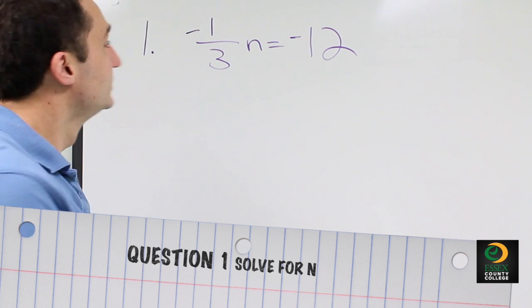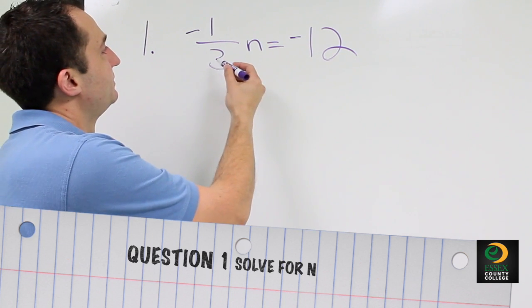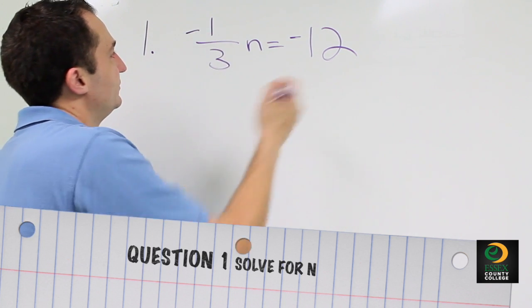The easiest way to do this problem would be to multiply both sides by the reciprocal of negative 3 over 1.